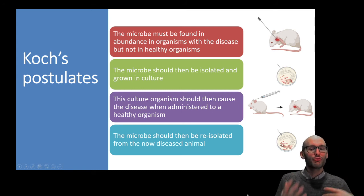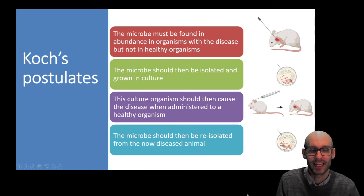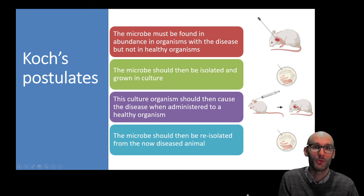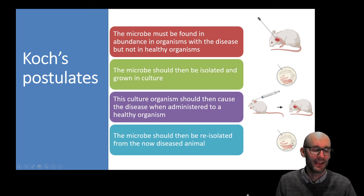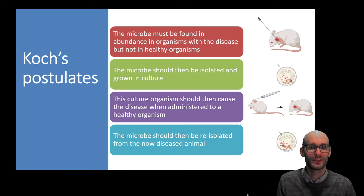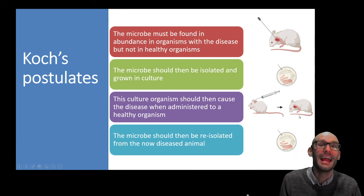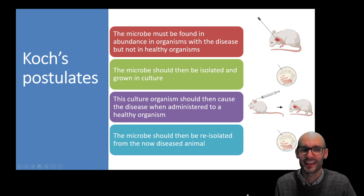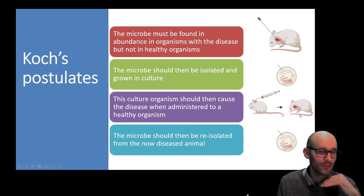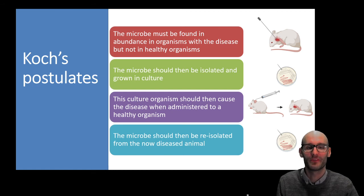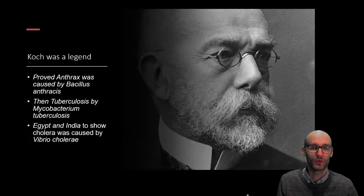Third, the microbe should then be re-isolated from the now-diseased animal. So if you propose that a certain bacteria causes a certain disease, it should cause the wound, be able to be isolated, be administered and cause the disease again, and then you should be able to isolate it once more — tripling the evidence that the bacteria causes this disease.